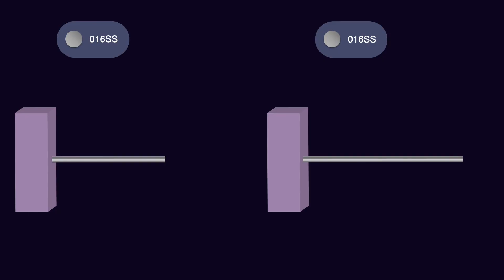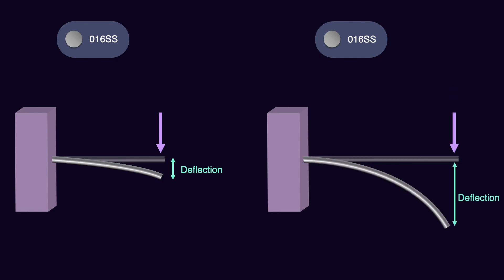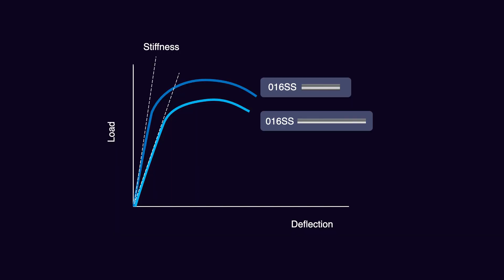Let's do a second experiment. We are using a 016 stainless steel wire, and in one condition we keep the length shorter, and in another condition we keep the length longer. We connect these two wires to the wall, apply the load, and collect data to make our load deflection graph. We get two graphs. The longer wire demonstrates more deflection under the load compared to the shorter wire. Therefore, the shorter wire's graph seems more upright, more rigid, more stiff, compared with the longer wire which deflects more.